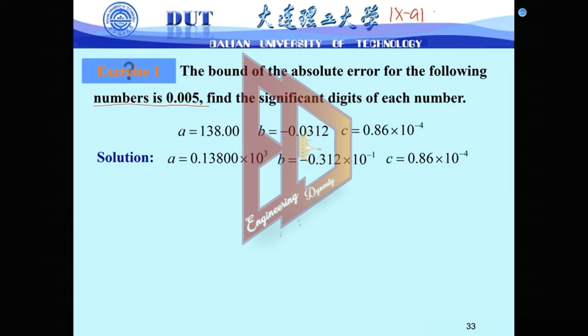The formula: |x - a| less than or equal to 1 over 2 multiply 10 to k minus n. So here we need to know what is k, and then n means the number of significant digits. We already know the error bound, so we need to write this error bound to this form. Firstly, we need to know what are the k for different A, B, C.